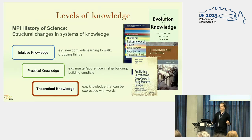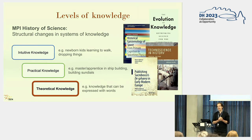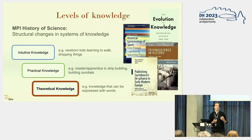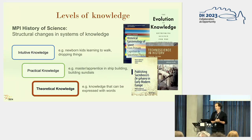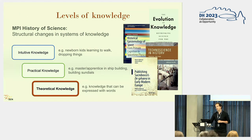We are from the MPI for the history of science, and our department is interested in structural changes in systems of knowledge. Systems of knowledge could be intuitive knowledge from the level of newborn children, practical knowledge — like how to build a boat and pass that on to future generations — and most interesting to myself, theoretical knowledge: something you are able to formalize. The most well-known system of formalized knowledge is our scientific publications, which are the low-hanging fruit because we have this vast amount of data. Many colleagues worked on structural changes using classical history of science methods, and my idea was to formalize this: how can we build something that quantitatively expresses structural changes?